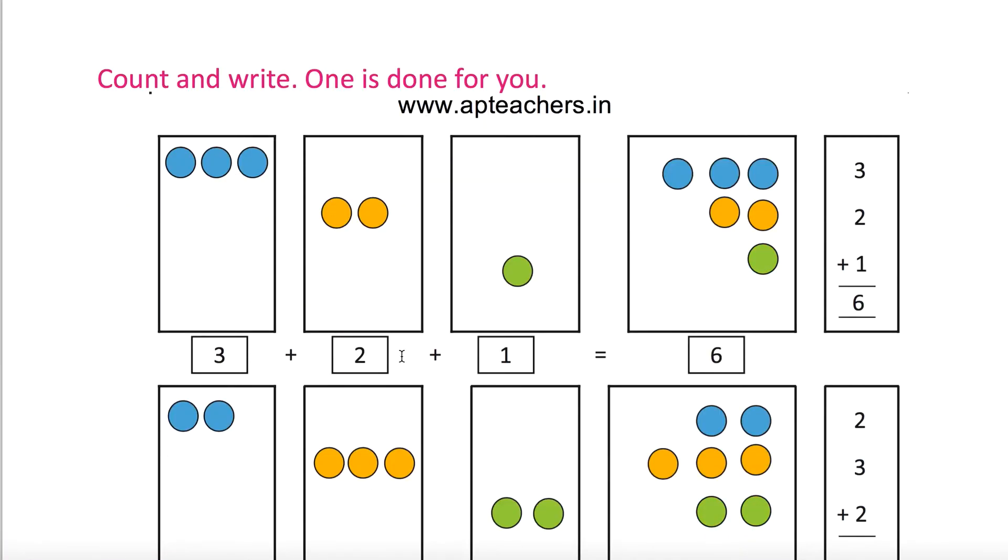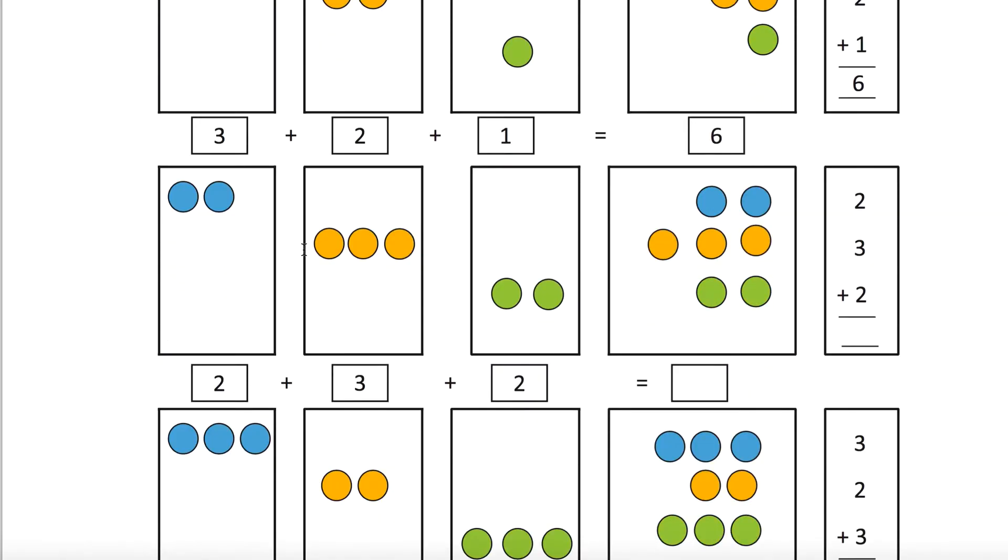Count and write. One is done for you. Three plus two plus one equals six. Two plus three plus two. One, two, three, four, five, six, seven. Two, three, two plus three is five, five plus two equals seven. So this is seven.